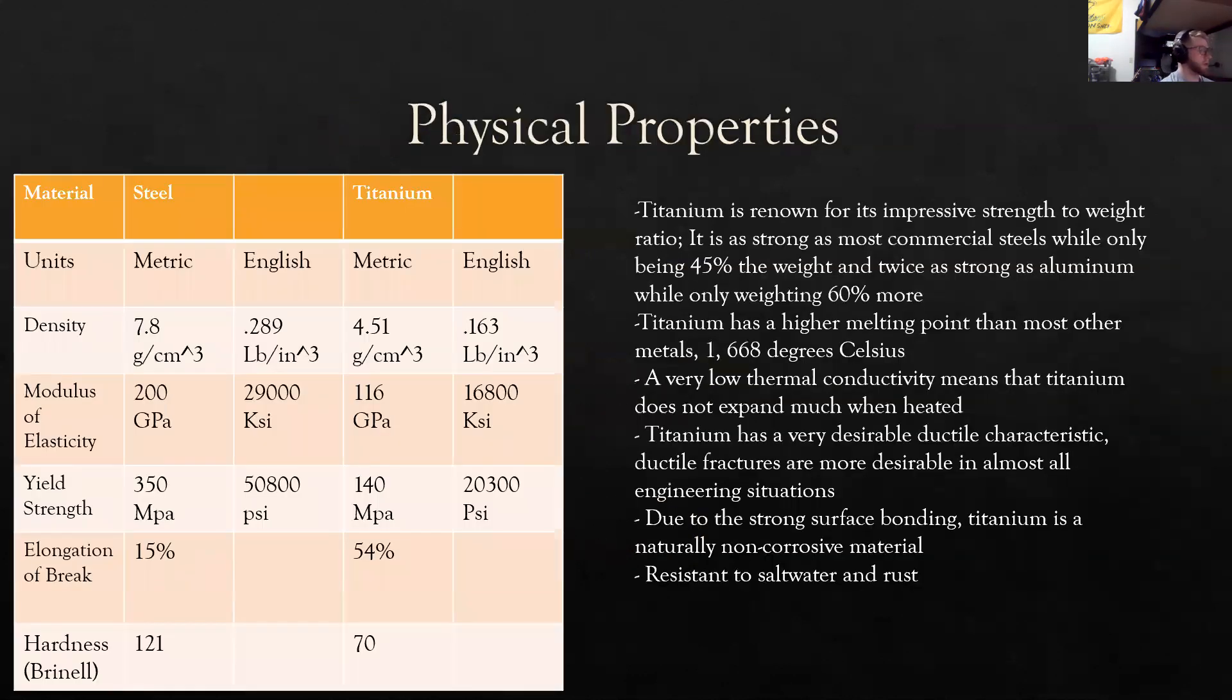The physical properties of titanium. Titanium is renowned for its impressive strength-to-weight ratio. It is as strong as most commercial steels while only being 45% of the weight of said steels. Or, to compare it to its other large competitor, aluminum, it is nearly twice as strong as aluminum while only weighing 60% more.